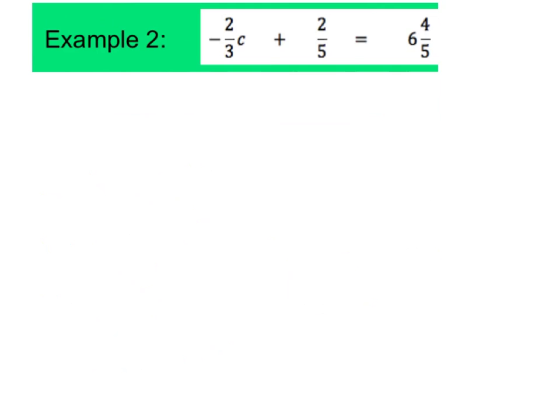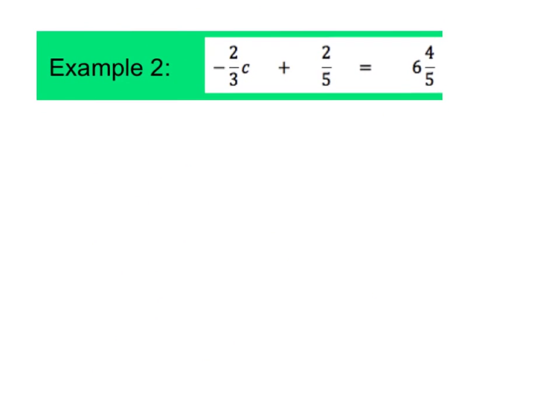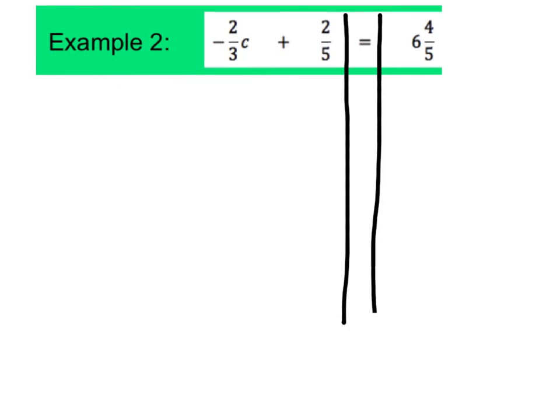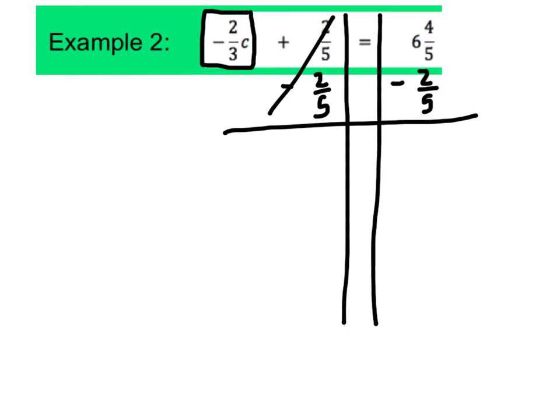Go ahead and write down example two. Some of you might think this one looks scarier because it has fractions, but we're going to follow the exact same procedure. I'm going to start by putting my railroad tracks in — those straight lines around the equal sign — to help me visualize both sides. I am going to eliminate any term that's added to my variable term. I can see that 2 fifths is being added to the variable term, so I'm going to subtract 2 fifths on both sides. Those terms are going to cancel each other out because they're inverse.